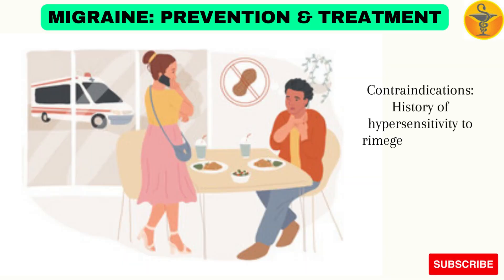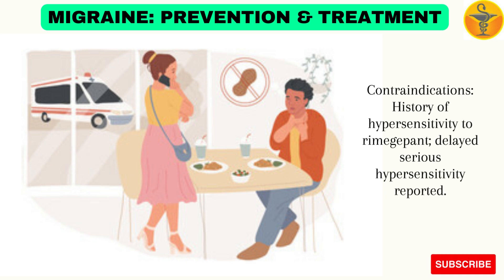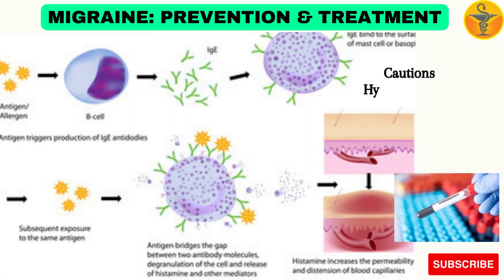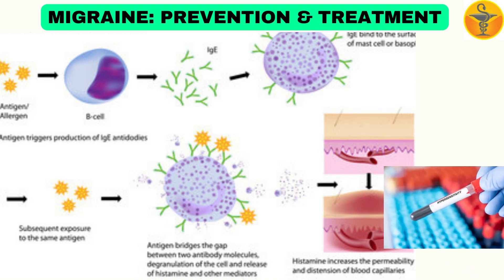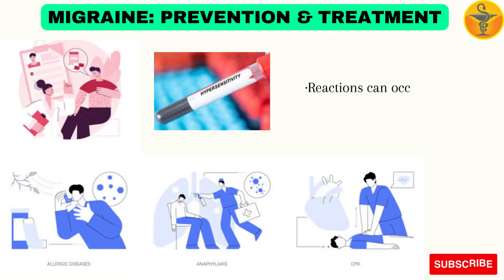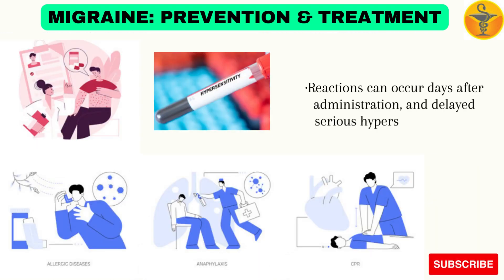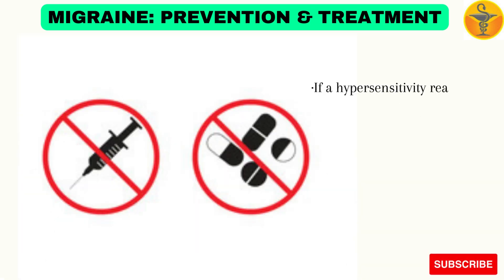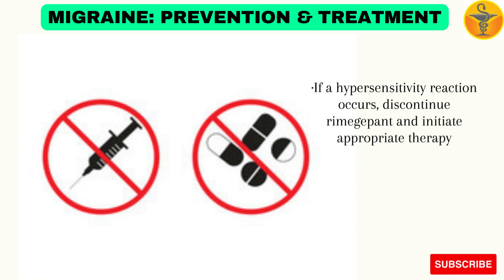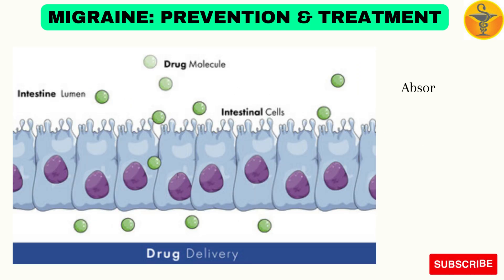Contraindications: History of hypersensitivity to Rimegepant. Delayed serious hypersensitivity has been reported. Cautions — Hypersensitivity: Hypersensitivity reactions, including dyspnea and rash, have been reported. Reactions can occur days after administration, and delayed serious hypersensitivity has occurred. If a hypersensitivity reaction occurs, discontinue Rimegepant and initiate appropriate therapy.